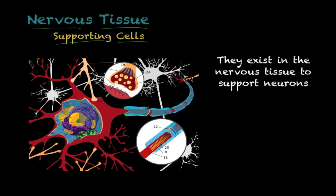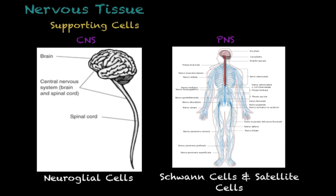In my illustration of the neuron, the blue structures I haven't yet mentioned are supporting cells — called Schwann cells. You can look these up in your books or class for more detail. The types of supporting cells found in your nervous system vary according to whether you're in the central nervous system versus the peripheral nervous system.